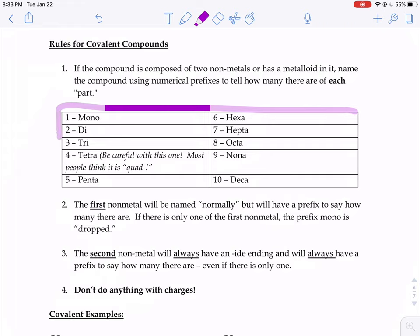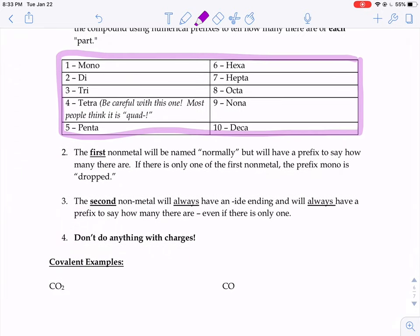And here's that same chart from the other day to tell you what those prefixes would be. The first nonmetal is always going to be named normally, but we'll have a prefix to say how many there are. So when I say named normally, you would say things like oxygen, not oxide, sulfur, not sulfide, nitrogen, not nitride. It's just whatever it says on the periodic table.